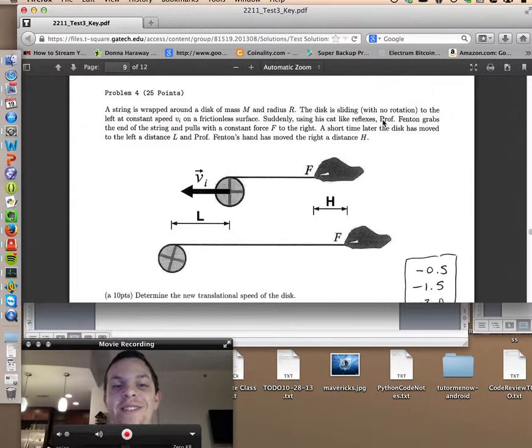Suddenly, using his cat-like reflexes, Professor Fenton grabs the end of the string and pulls with the constant force f to the right. A short time later, the disk has moved to the left a distance l, and Professor Fenton's hand has moved to the right a distance h. So as you can see in the picture describing the problem,